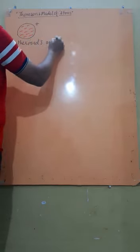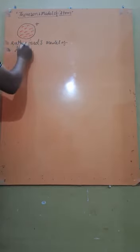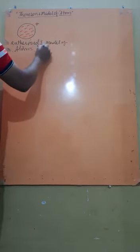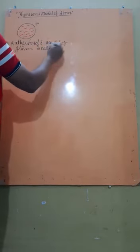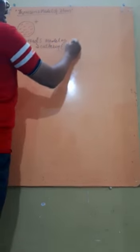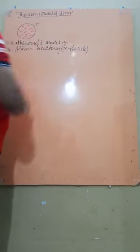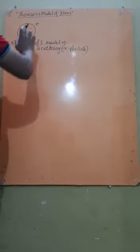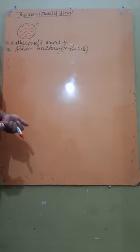That is the Rutherford model of atom, which is known as the scattering experiment — the alpha particle scattering experiment. That is, to justify whether the model suggested by Thomson is correct or not correct. Rutherford thought, let's study the Thomson model of atom.